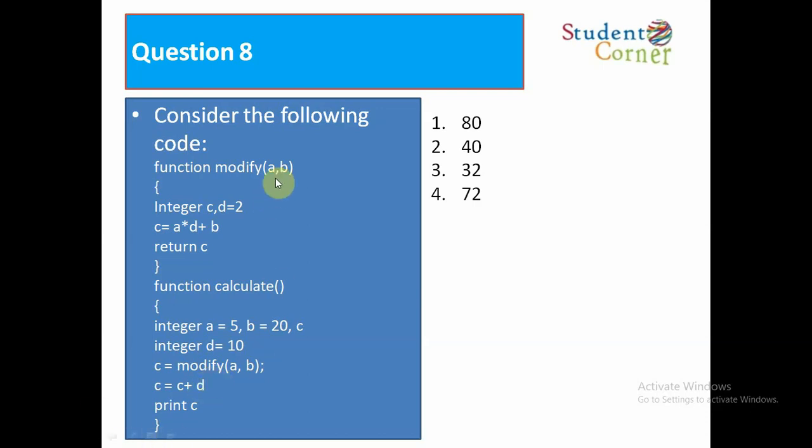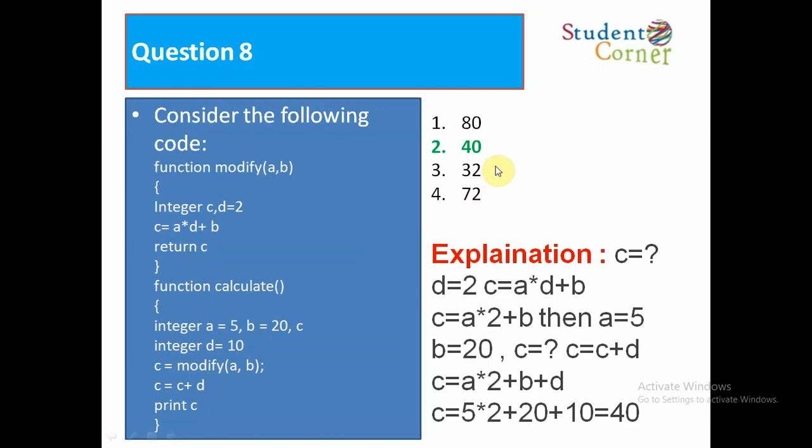Here, when the modify function is called, it calculates the value of a times d plus b. a is 5, 5 times 10 plus 20, 30 is returned. And that 30 plus this 10, 40 will be returned. So the answer is 40.